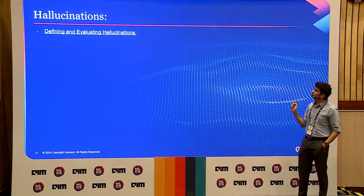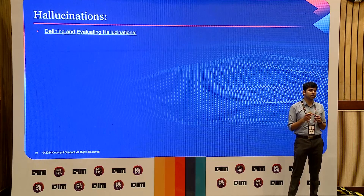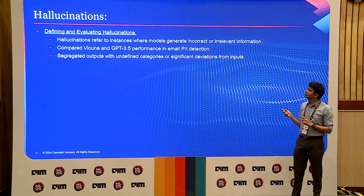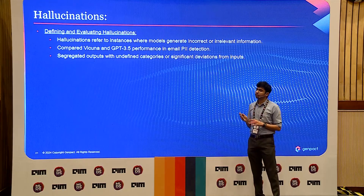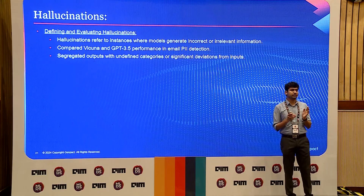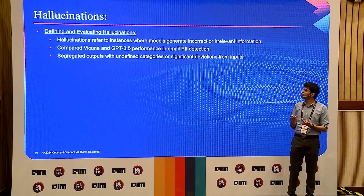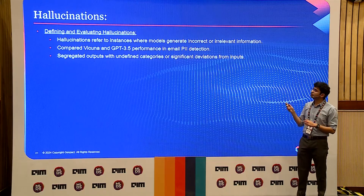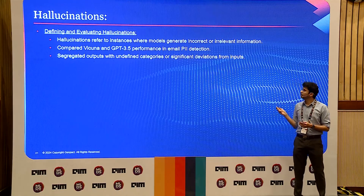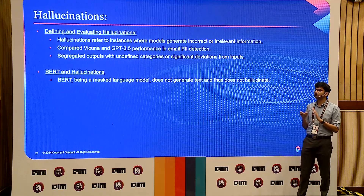Next we come to the observations. This is the most important topic when fine-tuning LLMs in general — in most downstream tasks it hallucinates drastically. Evaluating hallucinations was a very important part. When we used GPT-3.5 it hallucinated a lot, and same goes for Vicuna. We evaluated hallucinations two ways: one, programmatically checking if the model detects categories not part of our PII — that's a hallucination. If it produces a sentence different from the input, that's also hallucination. All the results you'll see are after taking out the hallucinating outputs. BERT, as a masked language model, does not hallucinate — it may give wrong outputs but does not hallucinate, making it very reliable.